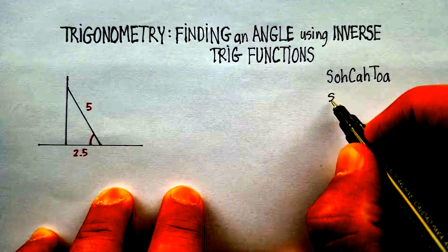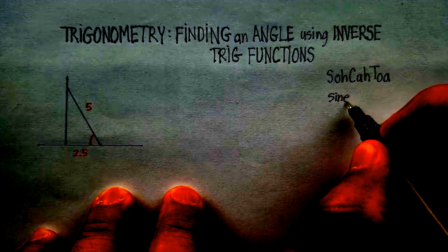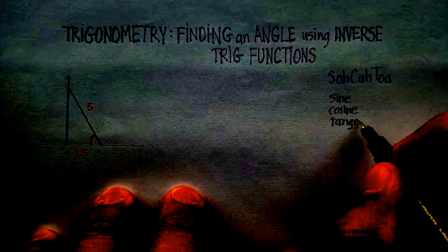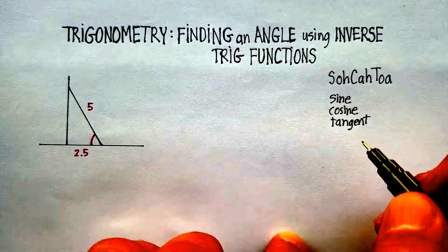And the three trig functions are sine, which we sometimes leave the e off, cosine, again we sometimes leave the e off, and tangent.